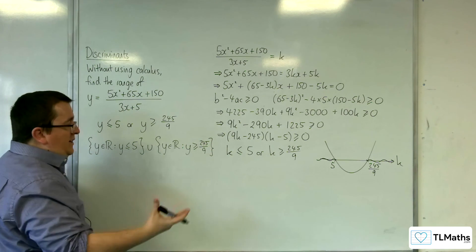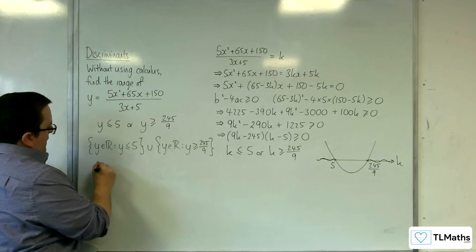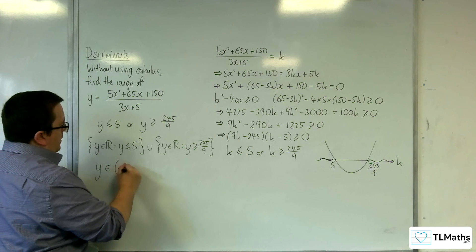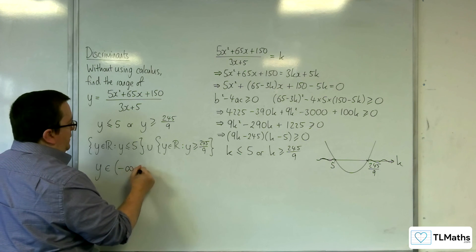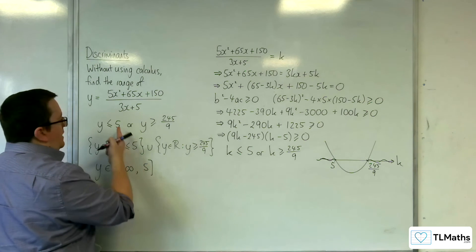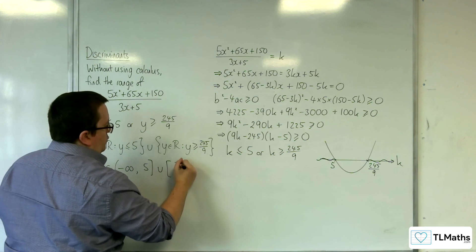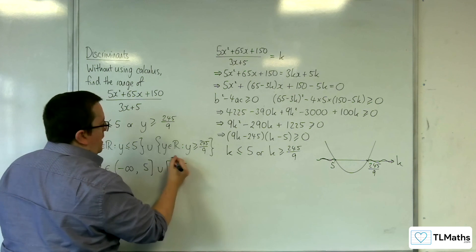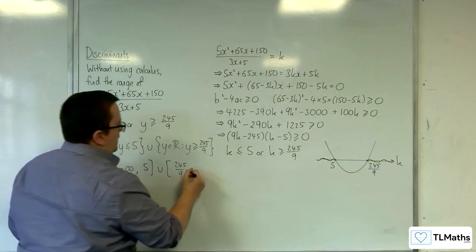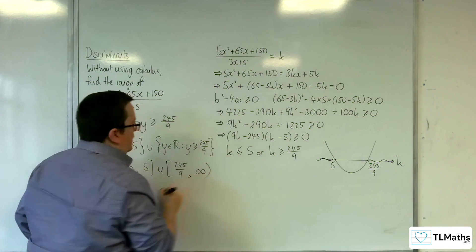And if you want it in interval notation, then y belongs to curve bracket for minus infinity, up to 5 with a square bracket, because we're including it, union, 245 over 9 with a square bracket, because we're including it, to infinity with a curve bracket.